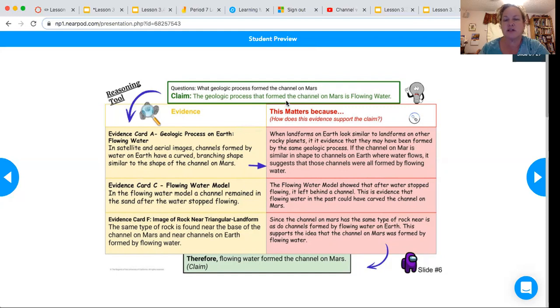The geologic process that formed the channel on Mars is flowing water. That's the claim. And I just noticed that this doesn't have a question mark. Then it's a question.